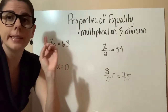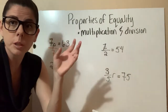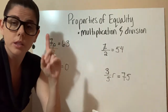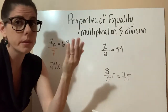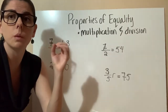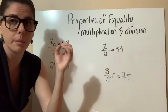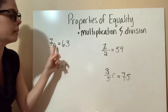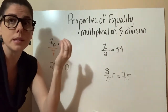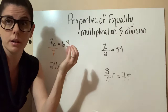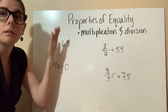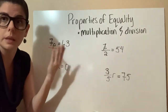Remember, our identity property for multiplication and division is 1. Anything divided by 1 equals itself, and anything multiplied by 1 equals itself — that's why it's called the identity property. Our goal is to get p to multiply by 1 so that p is by itself. So 7 over 7 equals 1, and p times 1 equals p.